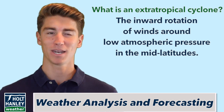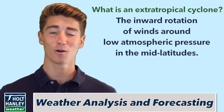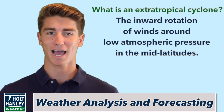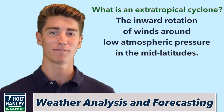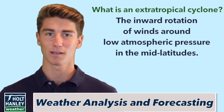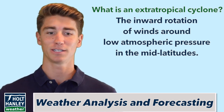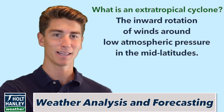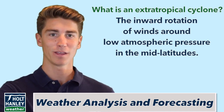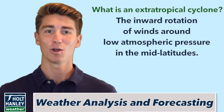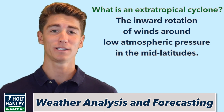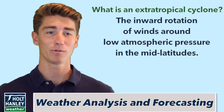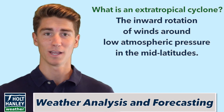If you think back to my Minute Meteorology video on why we have seasons, you'd remember me saying the Earth's axis is at a 23.5 degree tilt. This affects our definition of tropics, because past that latitude, there is no point in the year where the sun will be directly overhead. And that's how we define extra-tropical.